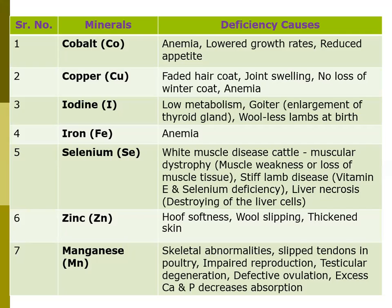Iodine is very well known and its deficiency causes decreased metabolic rate of the body, ultimately leading to lower growth rate in animals. It also causes goiter, which is the enlargement of the thyroid gland. At the time of birth, lambs are produced hairless — so iodine is also very important.